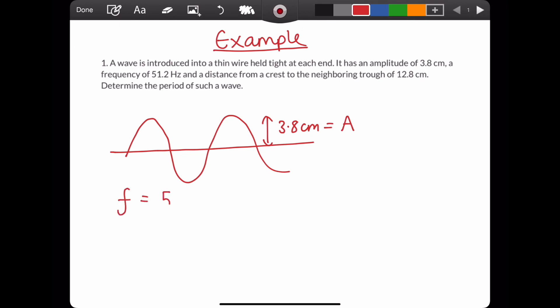We're given the amplitude, 3.8 centimeters. Frequency, 51.2 hertz. Now, we've been given the distance from a crest to the neighbouring trough, 12.8 centimeters. It's important to note that this is not the wavelength. You'd have to times that by two in order to get the full wavelength of the wave. But for this example, we just need to use frequency as 1 over time period.